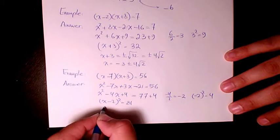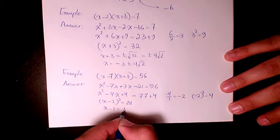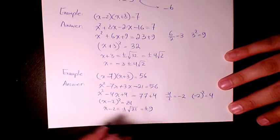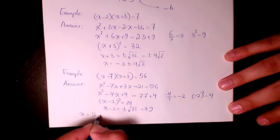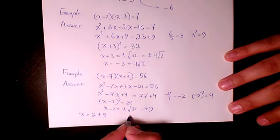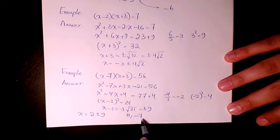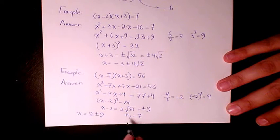81. So x minus 2 will be plus minus square root of 81, or plus minus 9. So x will be 2 plus minus 9, which will be 2 plus 9 is 11, 2 minus 9 is negative 7. So we have two answers: 11 and negative 7.